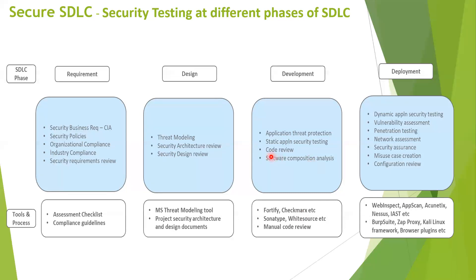We also do manual code reviews in addition to SAST. A frequent question is: when you have tools for code reviews, why do you need to do it manually? Most tools do not have cognitive intelligence — business logic scenarios will definitely get missed. The tools can't understand your code logic, which is why you need manual reviews. You can't do manual reviews for the entire code set because of the code size, so we take critical folders where there's a lot of logical algorithms and transactions happening — only those we do manual review, while the rest depends on the tools to identify vulnerabilities.